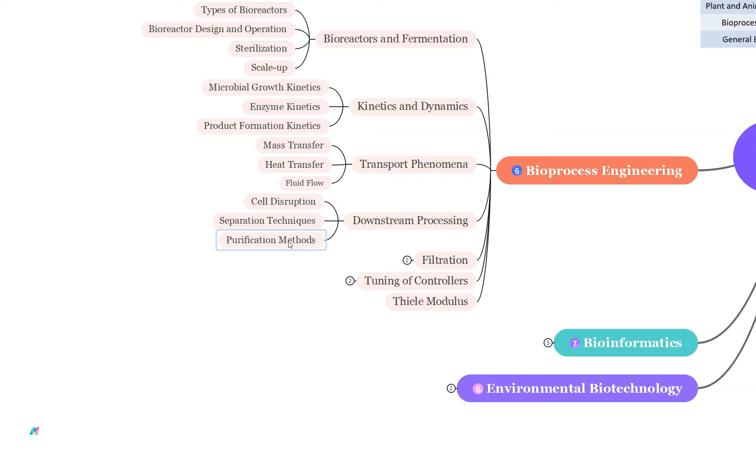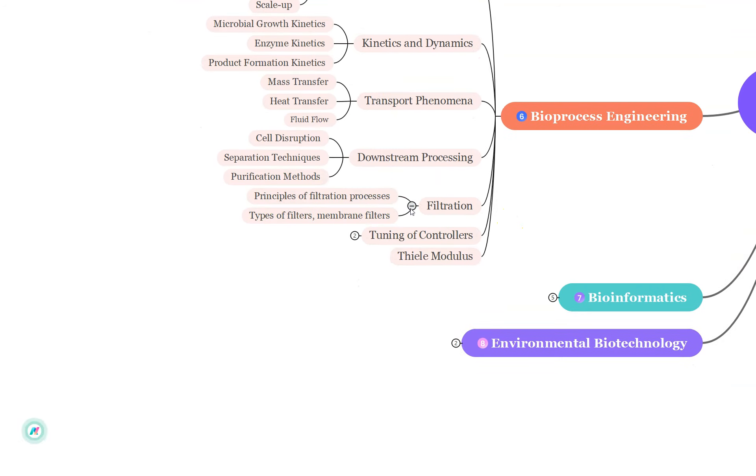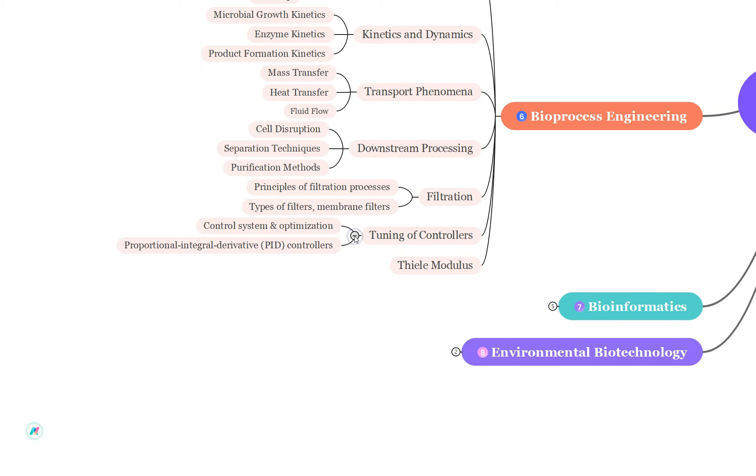Study their principles and also the application in questions. They might also give you tabular forms of different levels of purification and they can combine with an enzymology question like how much percentage of purification is achieved in every step. Next you have to study about filtration. Understand the principles of filtration processes used in bioprocessing. Topics may include different types of filters, membrane filters and also the applications.